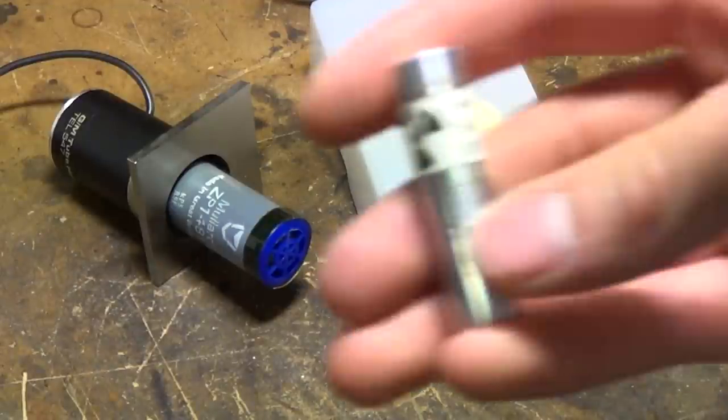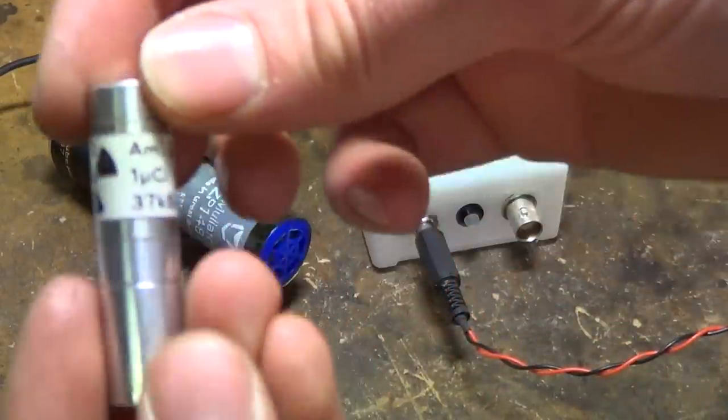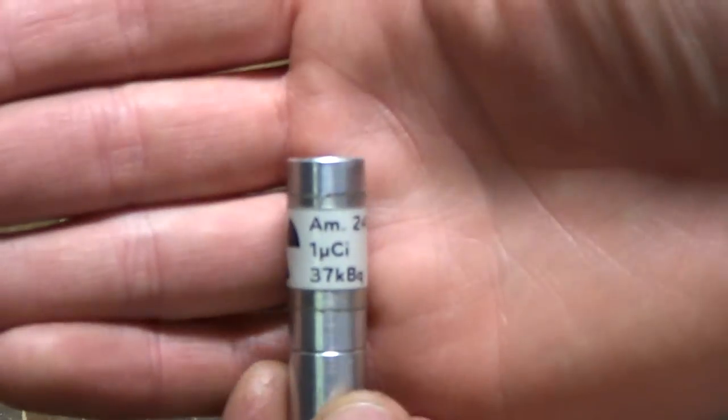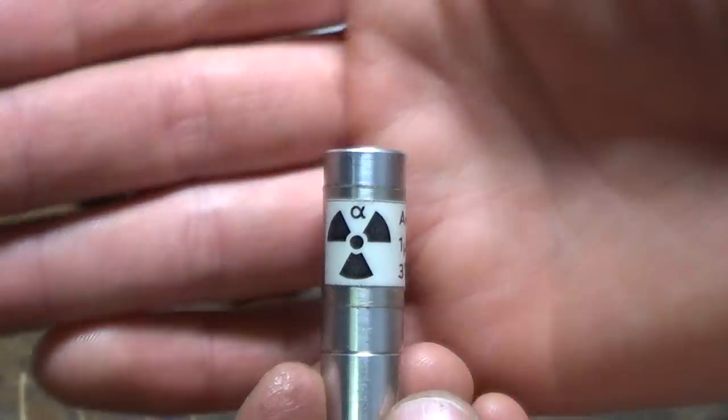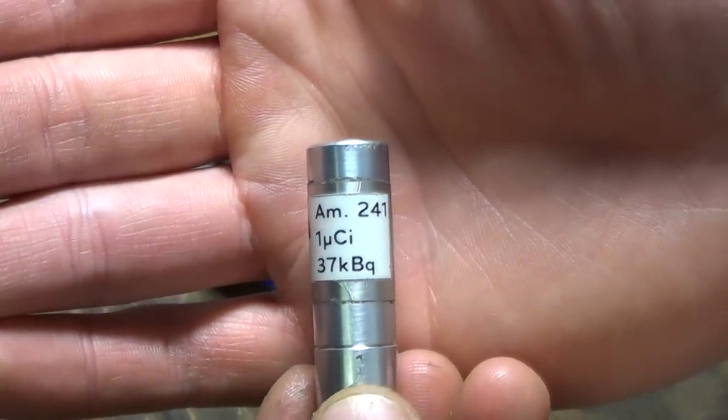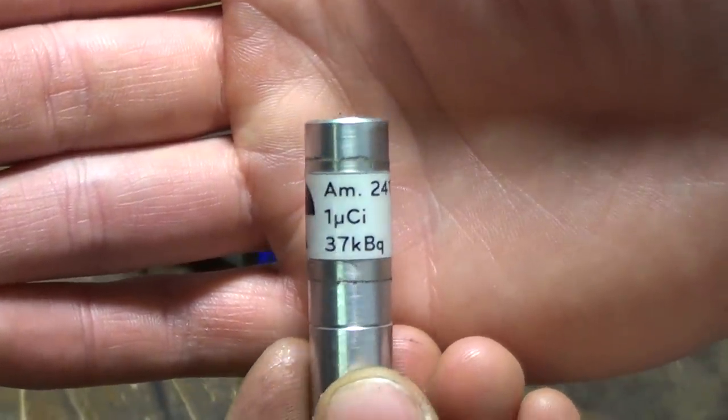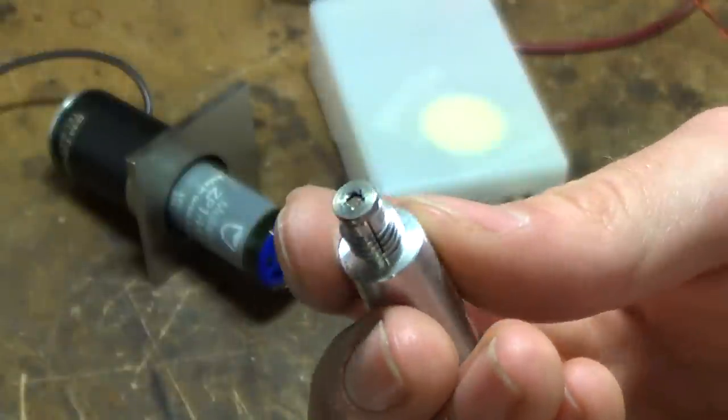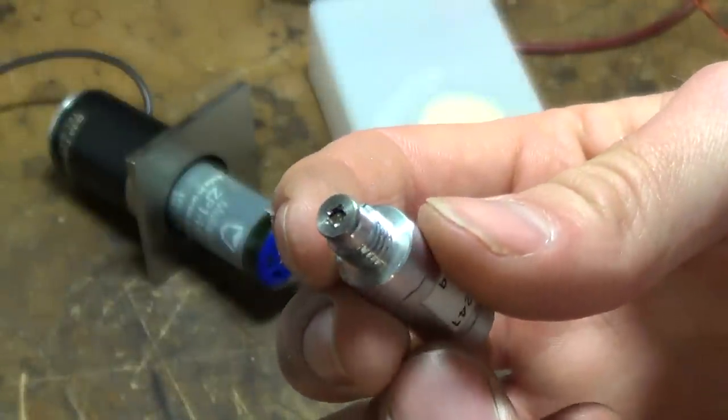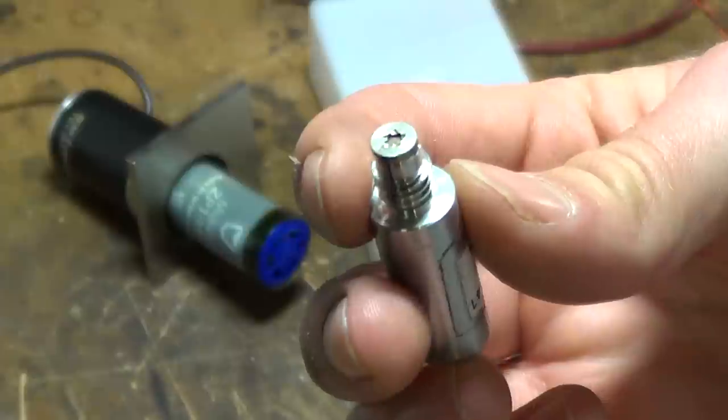Now the only radioactive source I actually have is this little thing, that focus, there. It's a holder I made for a source from a smoke detector, Americium-241. The source itself is that little disk at the end of the holder there.